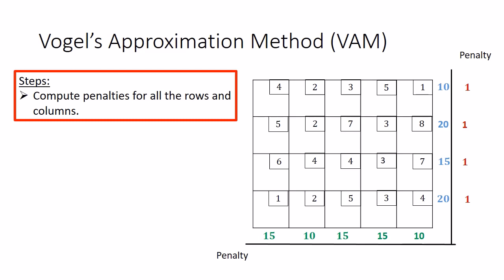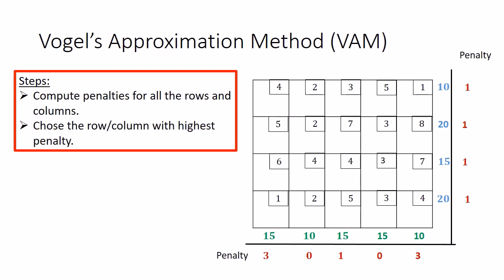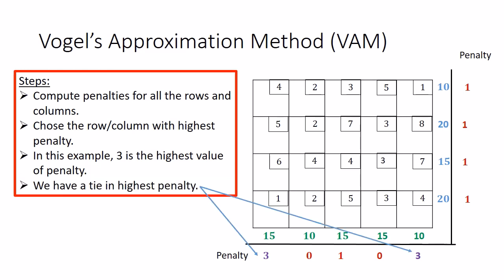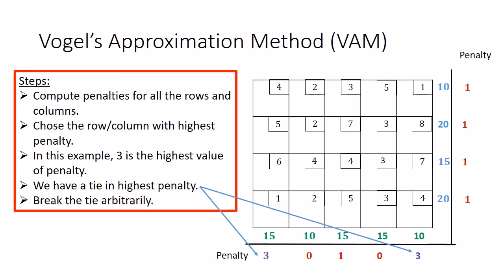Using the same formula you can compute the column penalties. The next step is to choose the row or column with the highest penalty — out of all nine penalties, we select the largest value. We can clearly see the largest value is 3, but there are two penalties with the same value, so there is a tie. The rule for breaking the tie is to select arbitrarily, so I will be selecting the first column for allocation.